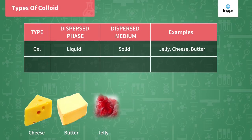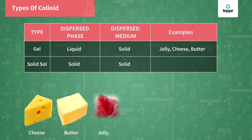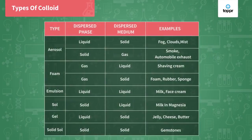The next one is solid sol, where the dispersed phase is solid and the dispersion medium is also solid. The example is gemstones — two colored gemstones which are solid are mixed together by liquefying them and then cooling them down, so they are a solid-in-solid type of colloid. So we have aerosol, foam, emulsion, sol, gel, and solid sol.